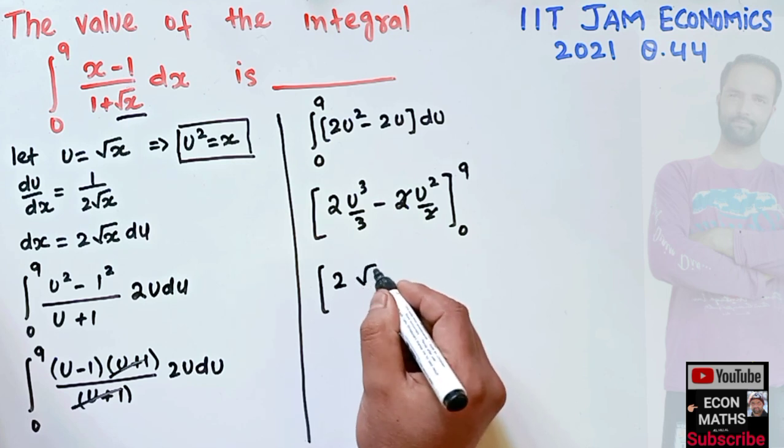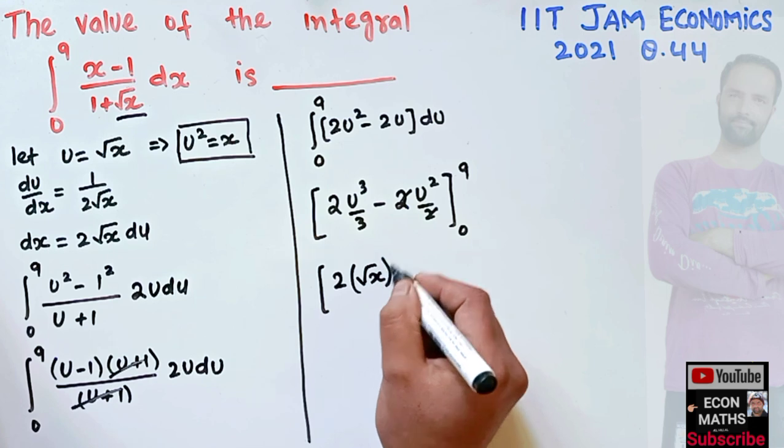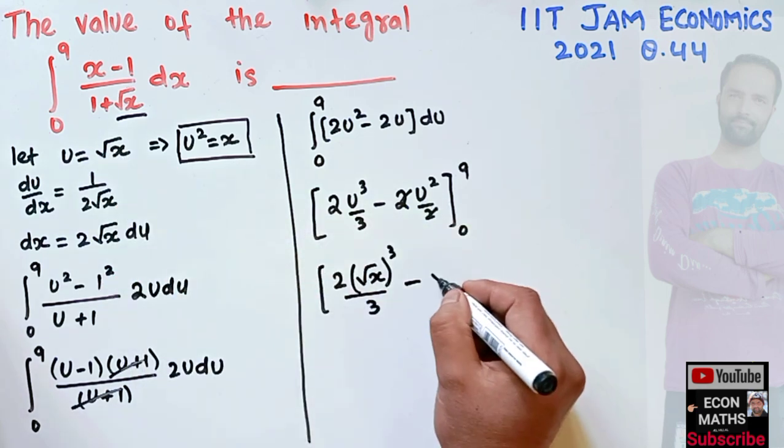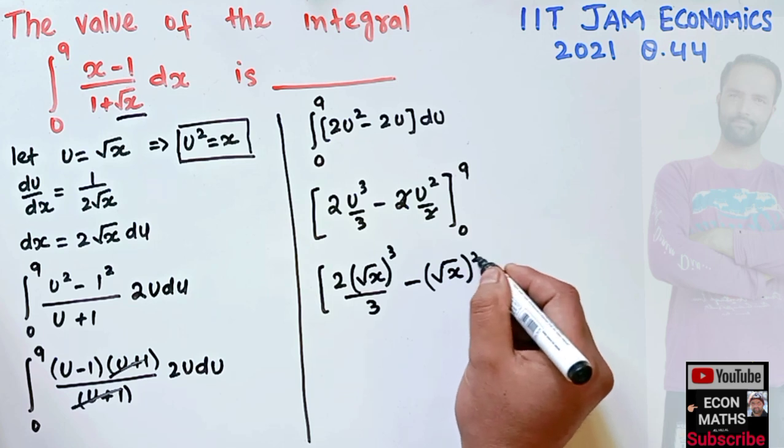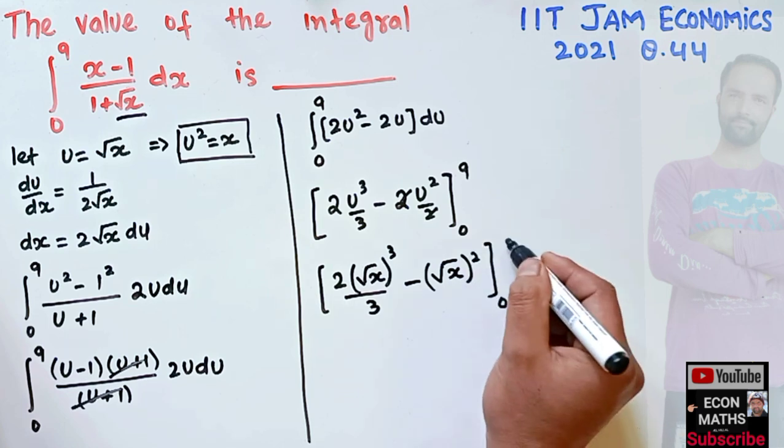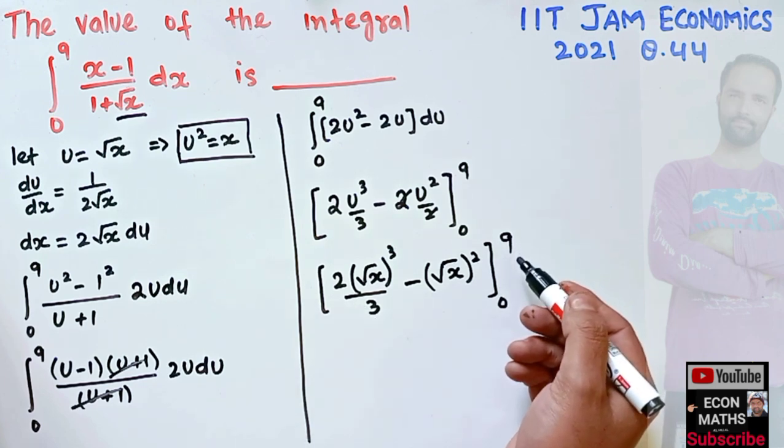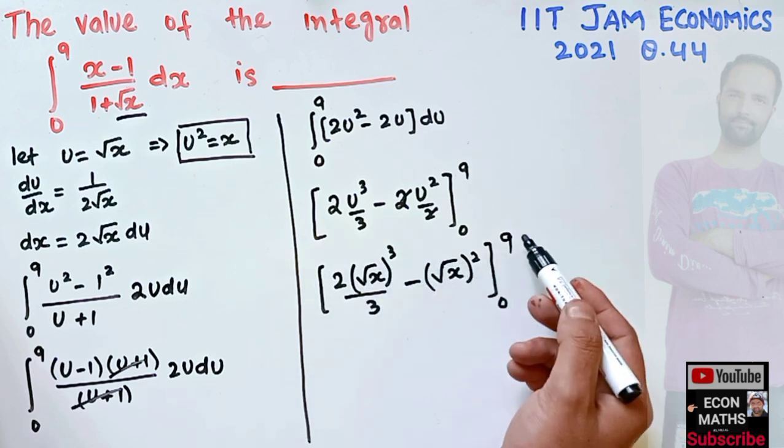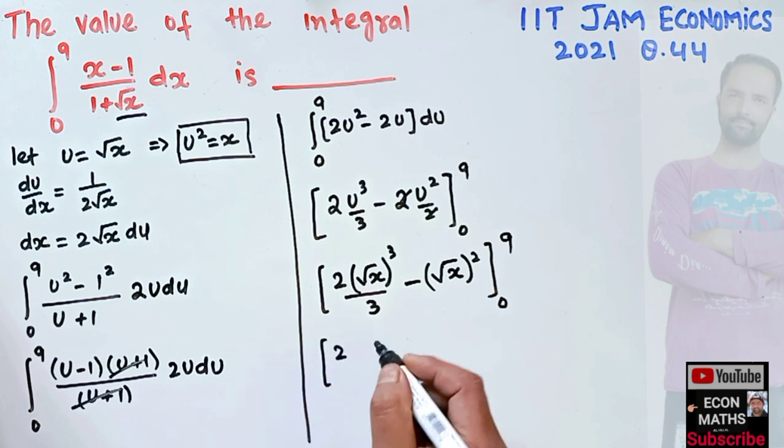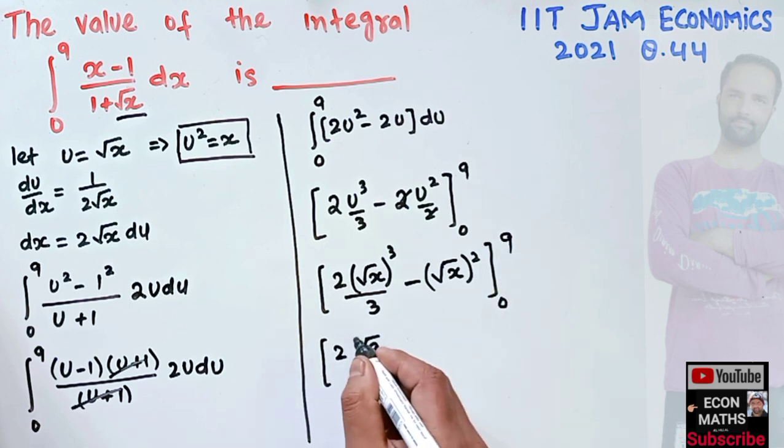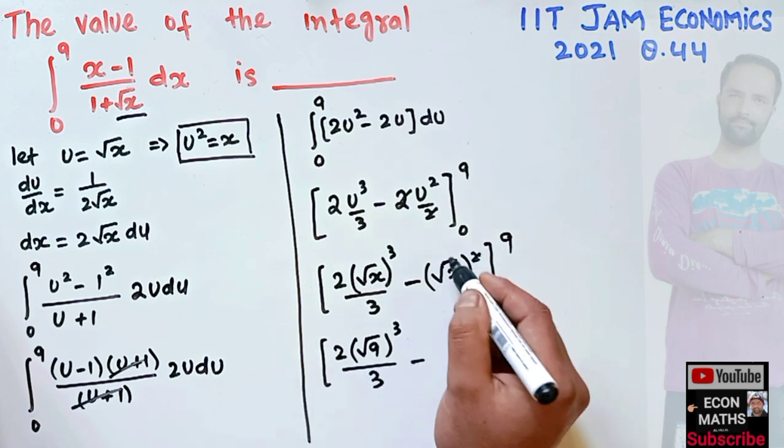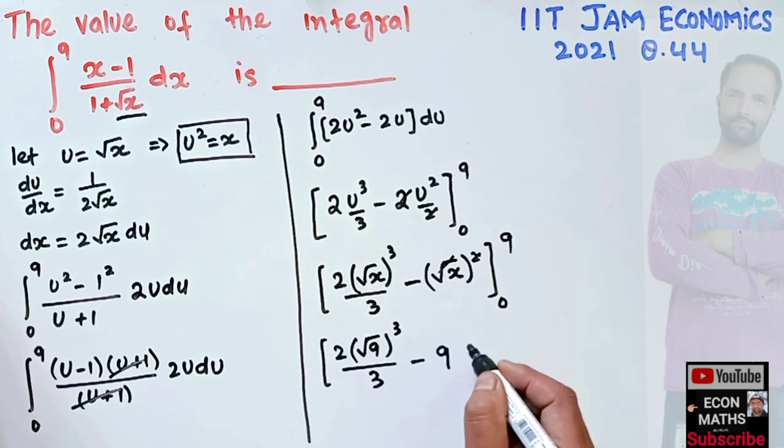So we have 2[(√x)³/3 - (√x)²] evaluated from 0 to 9. Now u = √x, so in place of u we can write (√x)³/3 - (√x)² from 0 to 9. We have to evaluate it.